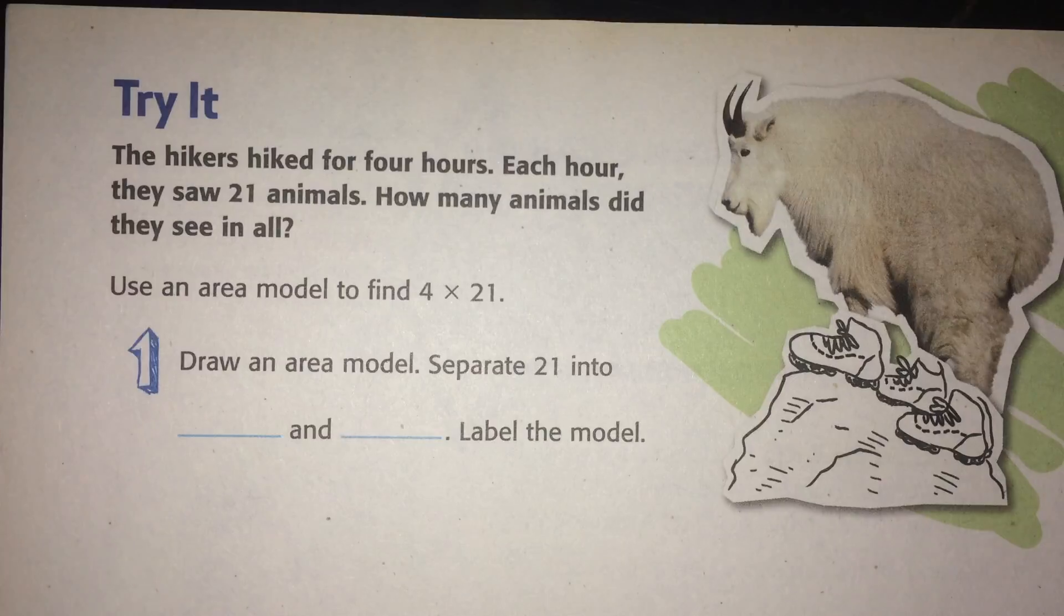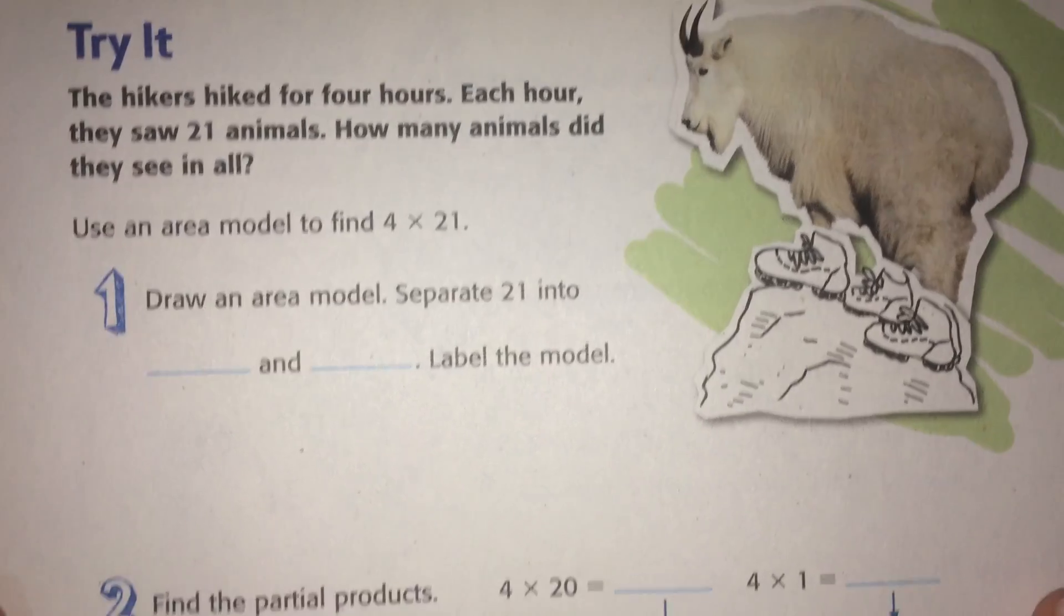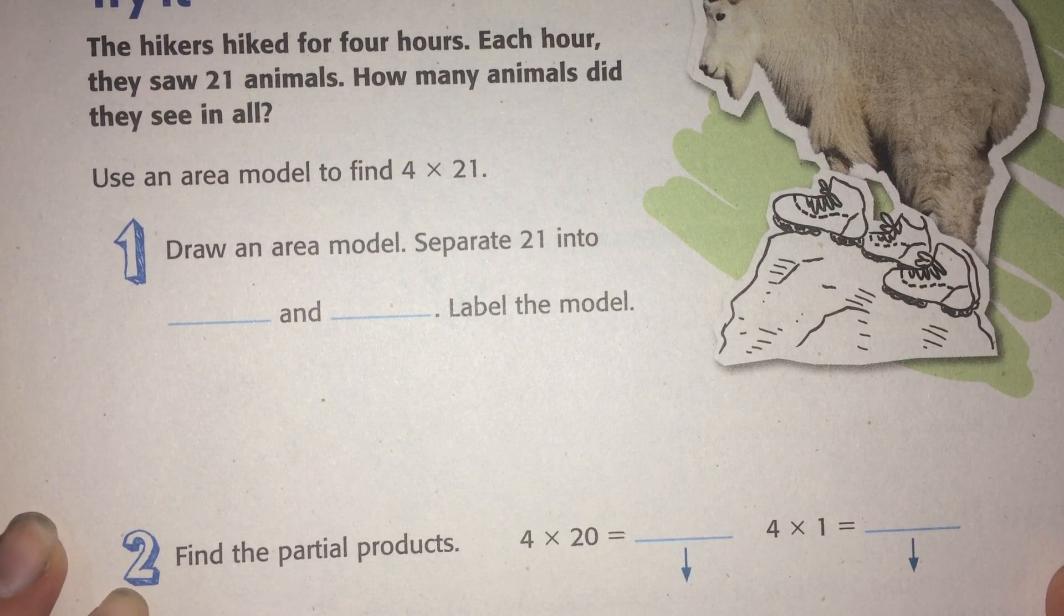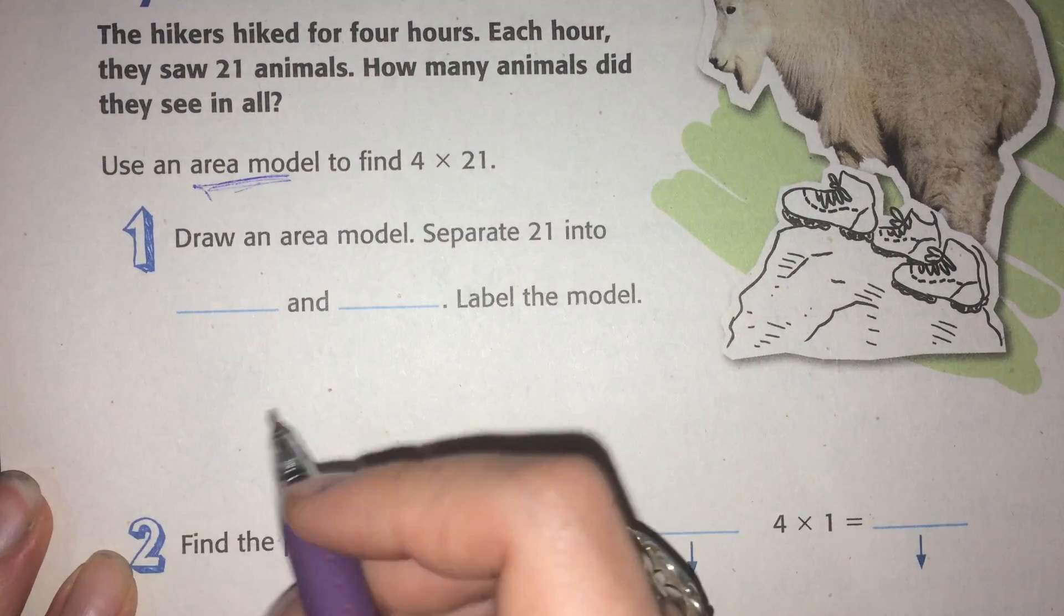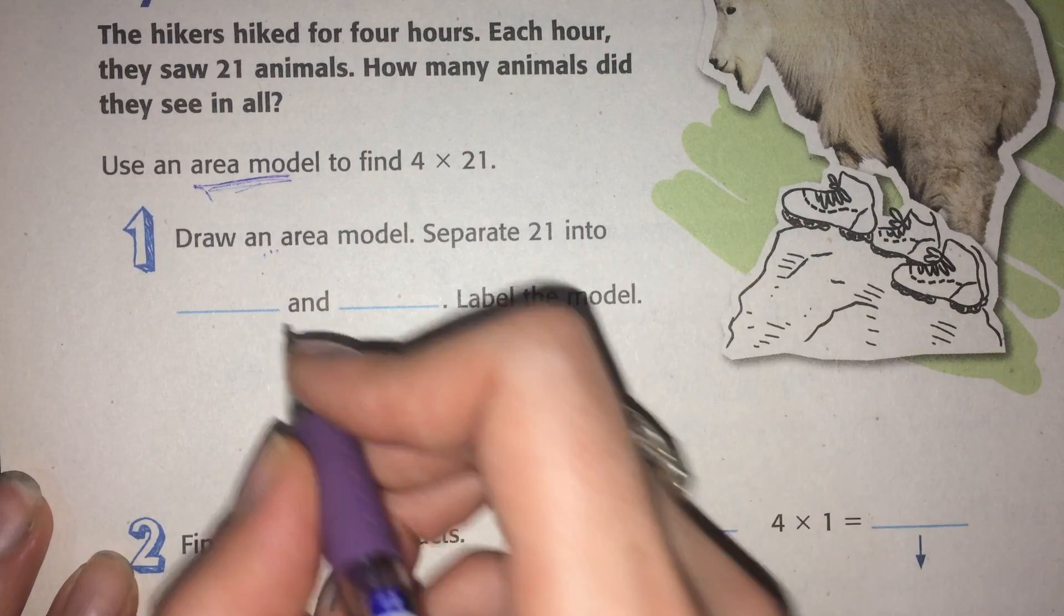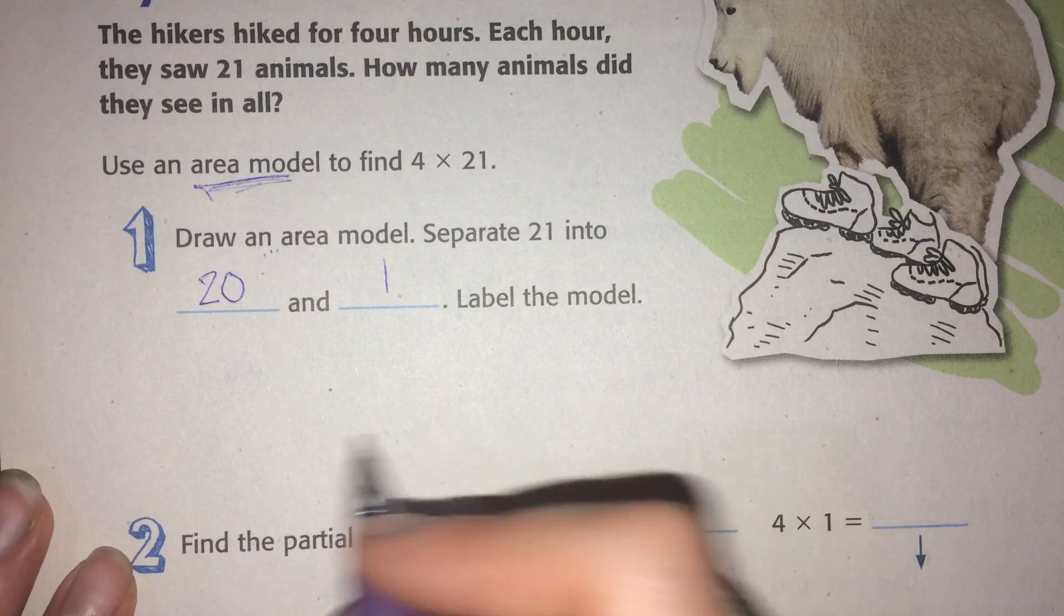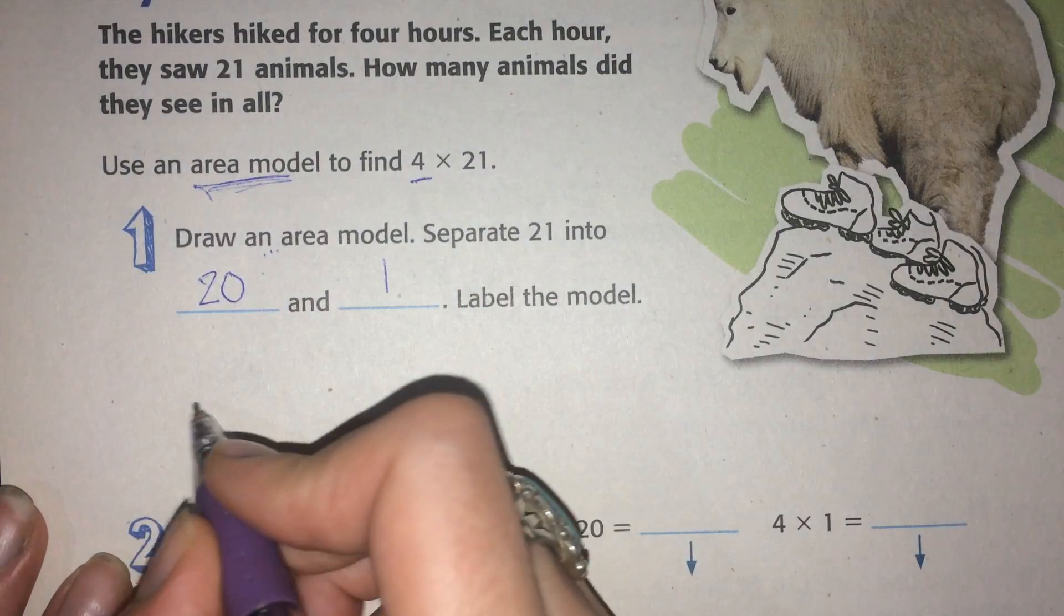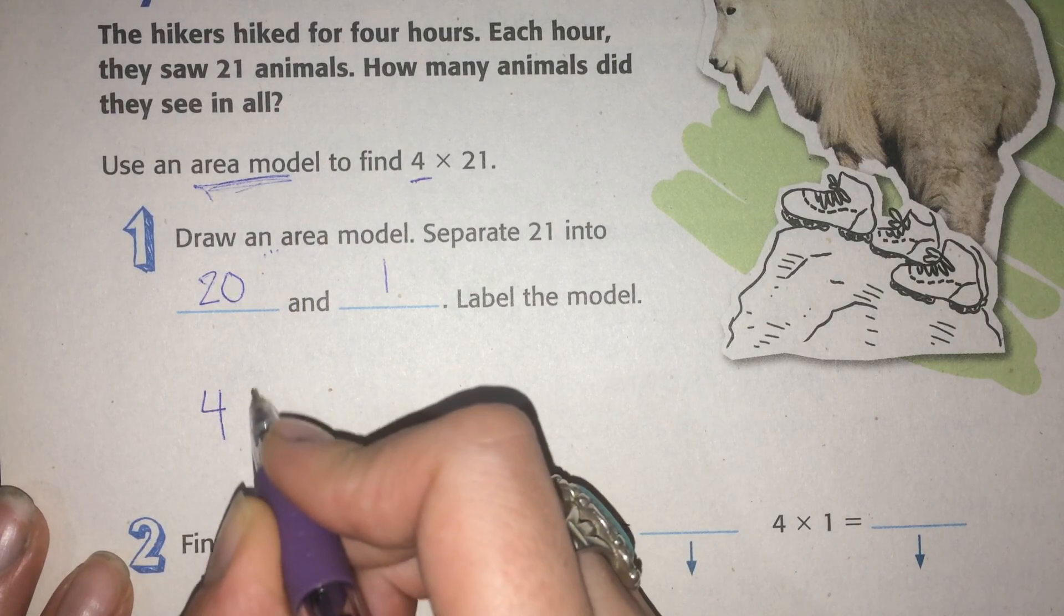Let's try it. The hikers hiked for 4 hours. Each hour they saw 21 animals. How many animals did they see in all? It says use an area model. So we have to draw the area model. Separate 21 into expanded form, which is 20 and 1, and we have 4 hours. So we need a group to be 4.